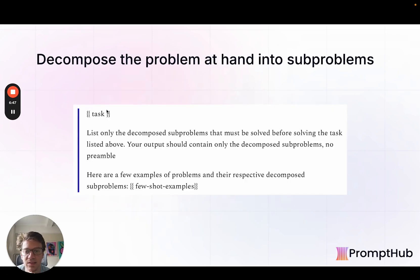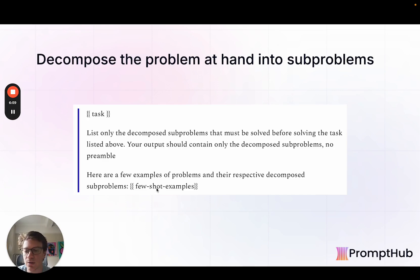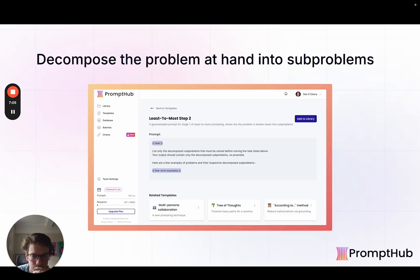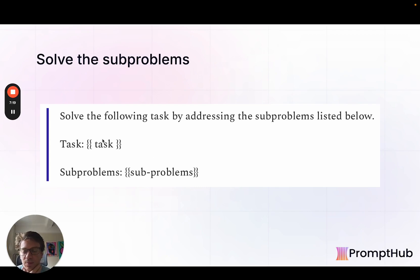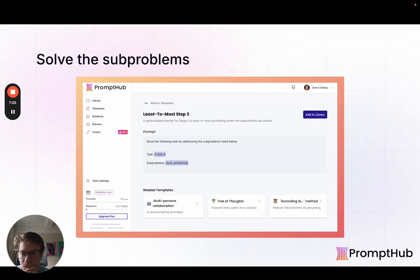In the second step, we pass that same task and say: list the decomposed subproblems before solving the task — only send us the subproblems. Then we say here are some examples, so the LM knows generally how to decompose the problems. This comes from the previous step, and we have a template in PromptUp for this as well. In the last step, now that we have those examples and subproblems, we actually go ahead and solve the task — solve the task by addressing the subproblems listed below — passing the task and the subproblems, which is the output from the step before.